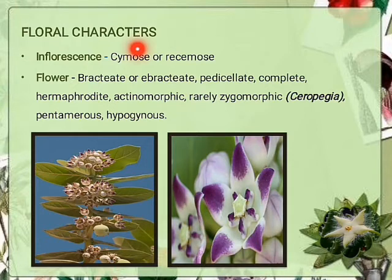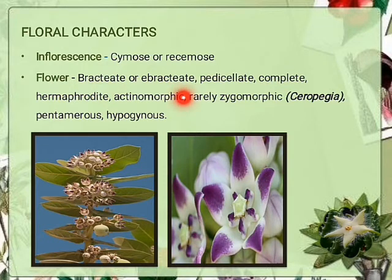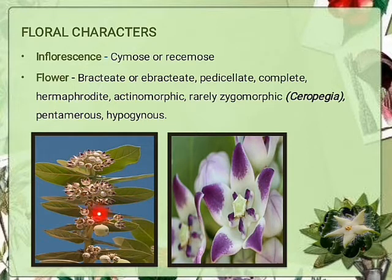Inflorescence: cymose type — flowers grow in acropetal succession, meaning older flowers are at the base and younger flowers are at the apex. In racemose inflorescence the apical bud is converted into a flower, so older flowers are at the apex and younger at the base. Flowers bractate or ebractate, pedicellate, complete, hermaphrodite (bisexual), actinomorphic rarely zygomorphic (e.g. Ceropegia — asymmetric flower), pentamerous, hypogynous (superior ovary). Calotropis procera shows umbellate cymose inflorescence.